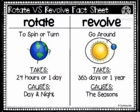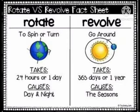Now let us study about rotation and revolution. What is rotation? It is the movement of the earth around its axis. Whereas revolution is the movement of the earth around the sun in a fixed path or orbit.